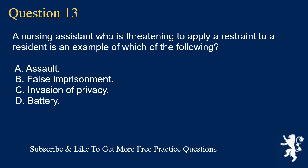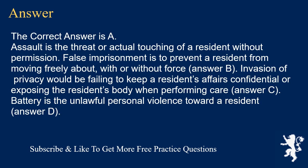Question 13. A nursing assistant who is threatening to apply a restraint to a resident is an example of which of the following? A. Assault. B. False imprisonment. C. Invasion of privacy. D. Battery. The correct answer is A. Assault is the threat or actual touching of a resident without permission. False imprisonment is to prevent a resident from moving freely about, with or without force. Invasion of privacy would be failing to keep a resident's affairs confidential or exposing the resident's body when performing care. Battery is the unlawful personal violence toward a resident.